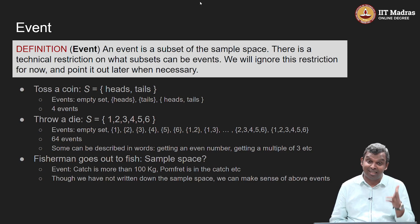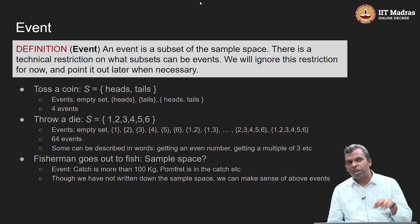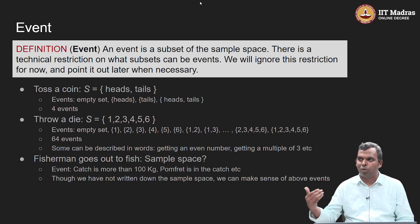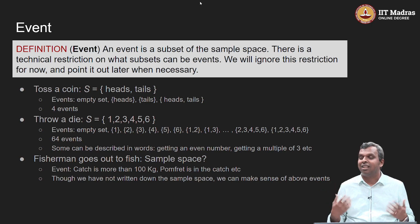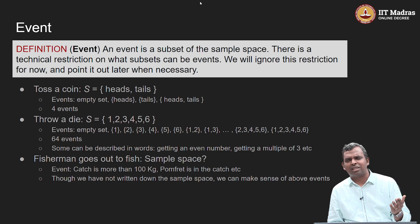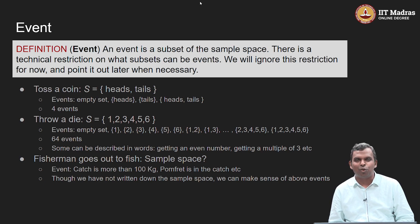You can have an event {heads} — that is an interesting event. You toss a coin, the sample space contains all outcomes, but your event of interest is only heads. For example, you are going out for a cricket match, somebody is tossing and you have called heads — you are really interested in whether it is heads or not. Likewise, you have {tails}, and then the final event which equals the sample space itself, {heads, tails}. Those are the four events.